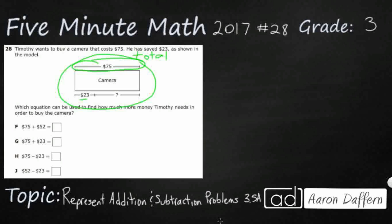And so what we're looking at here is we've got a part-part-whole or strip diagram, whatever you might want to use to describe this. And let's look to see what we would need. We know that he needs $75. So that's the total.